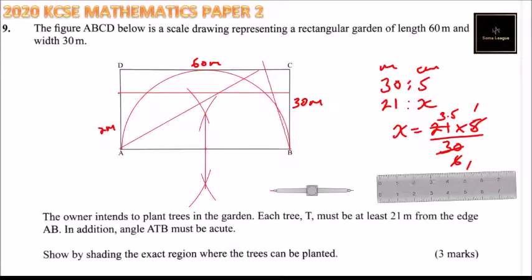So that we have satisfied the region that we are required, this condition here. The condition angle ATB must be acute. So with that, this is the region. So we can now shade the region that this is the region where the trees will be planted.